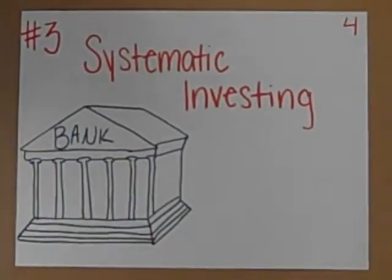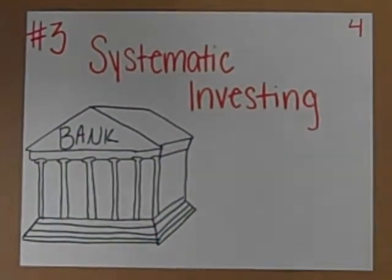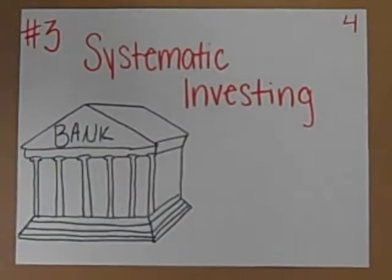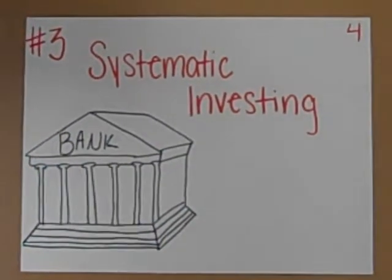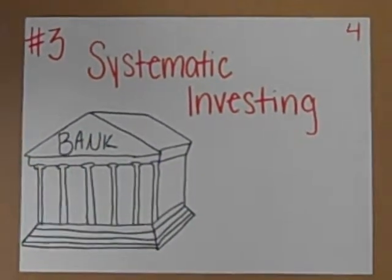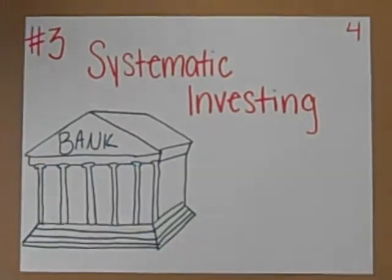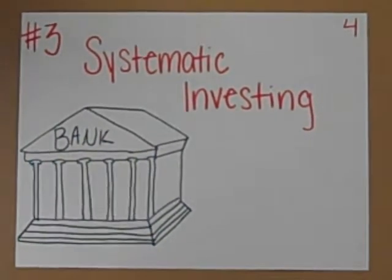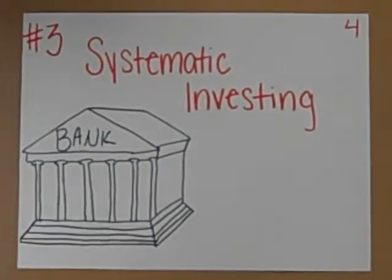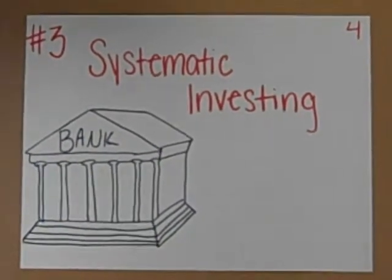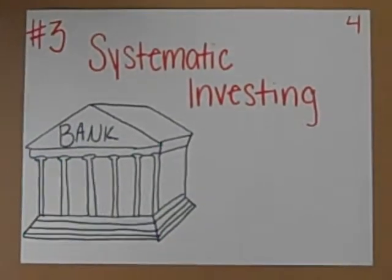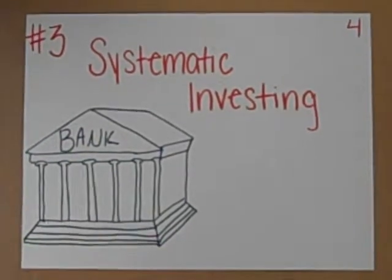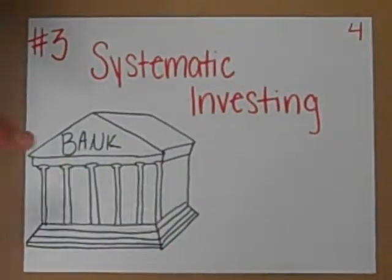After you've had some experience with investing, you can move into systematic investing. In systematic investing, you invest a certain amount of money consistently into stocks, mutual funds, and annuities. These investments are long-term investments. The risk, return, and liquidity depend on what you invest in.